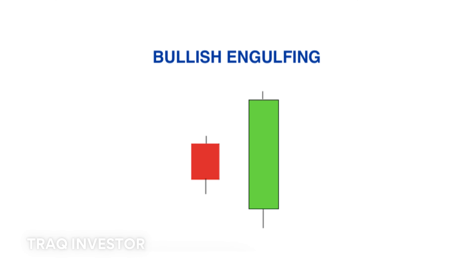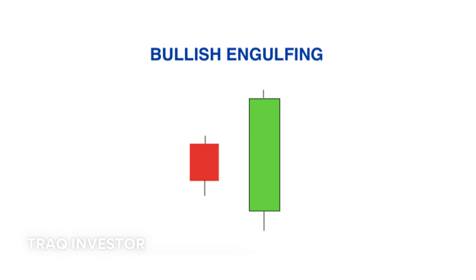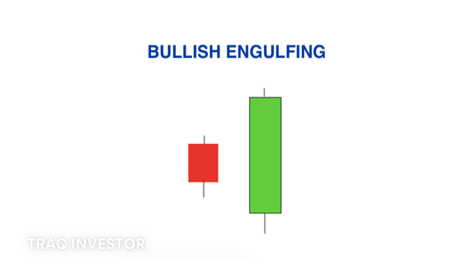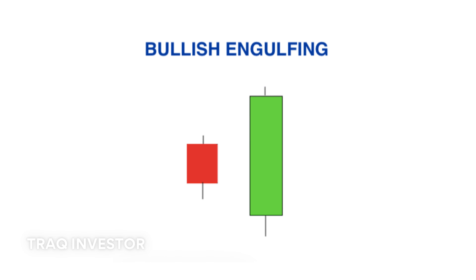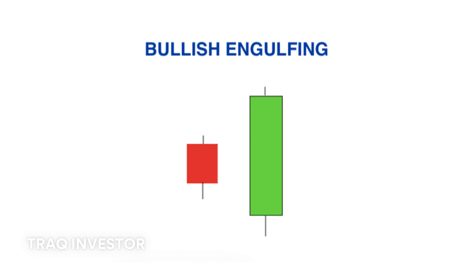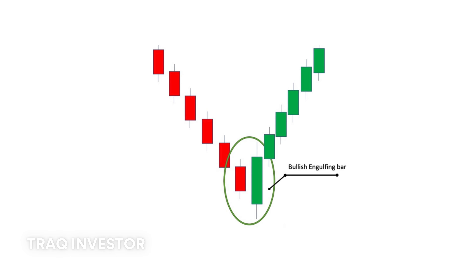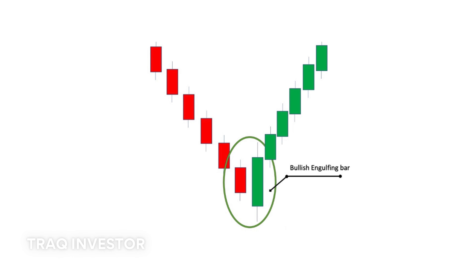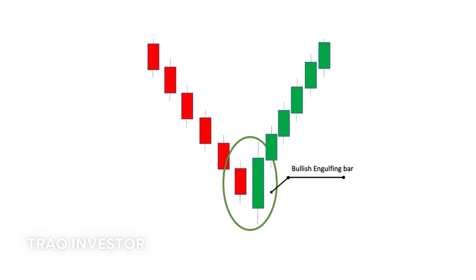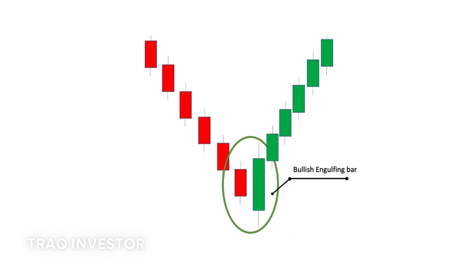Moving on to the bullish engulfing pattern, which consists of two candlesticks. The first is a short red body entirely engulfed by a larger green candle. Despite the second day opening lower, the bullish market propels the price up, indicating a clear win for buyers.